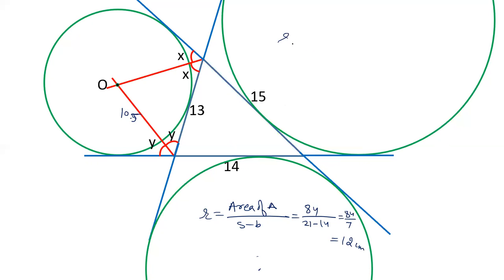Now radius of this circle will be area of triangle upon S minus C. Area of triangle is 84, C is 15, S is 21. And the difference of these two is 6. 84 by 6, that is, this is the biggest circle and its radius is 14.